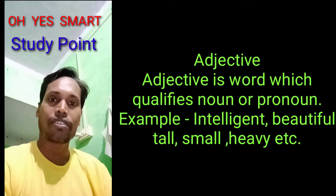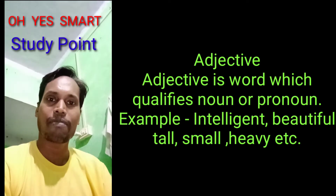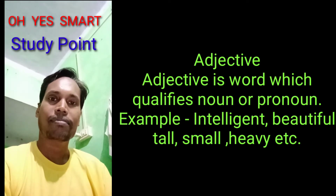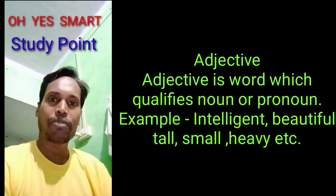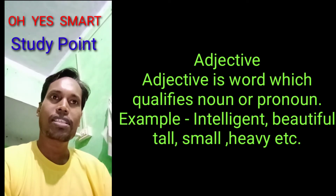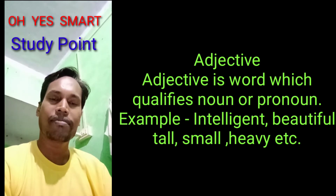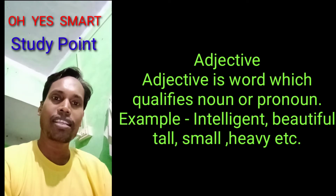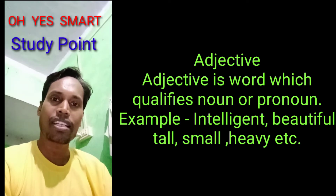What is adjective? Adjective is a word which qualifies a noun or pronoun. For example, 'she is a beautiful girl' — here beautiful is the adjective. Similarly, 'he is an intelligent boy' — here intelligent is the adjective.